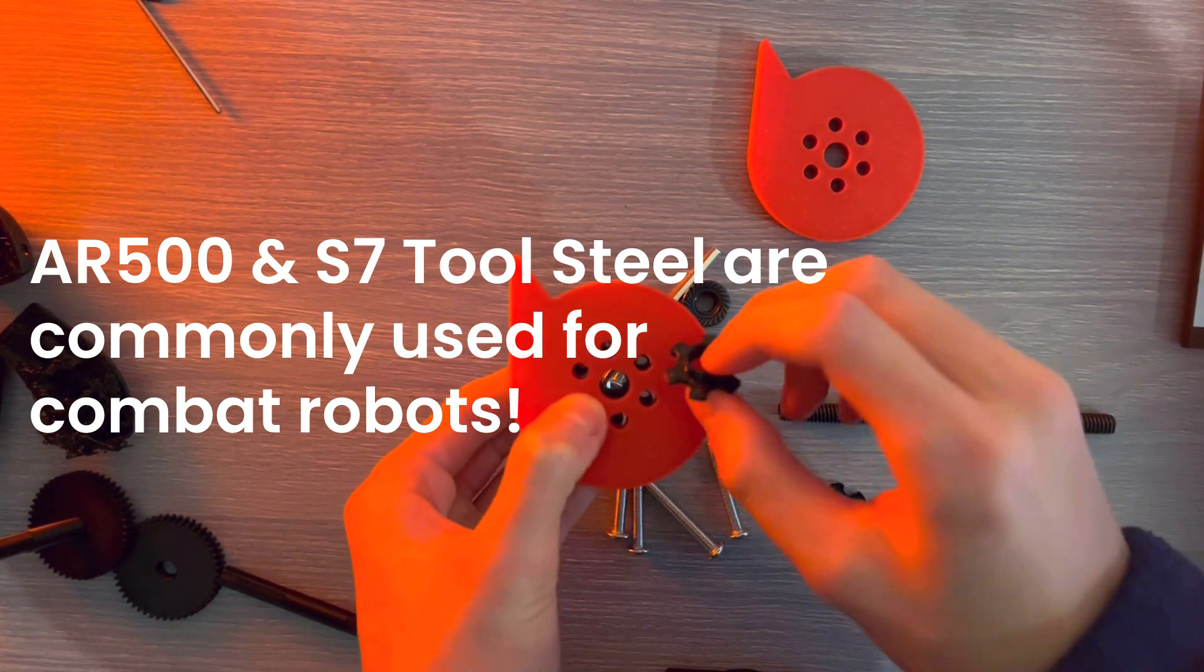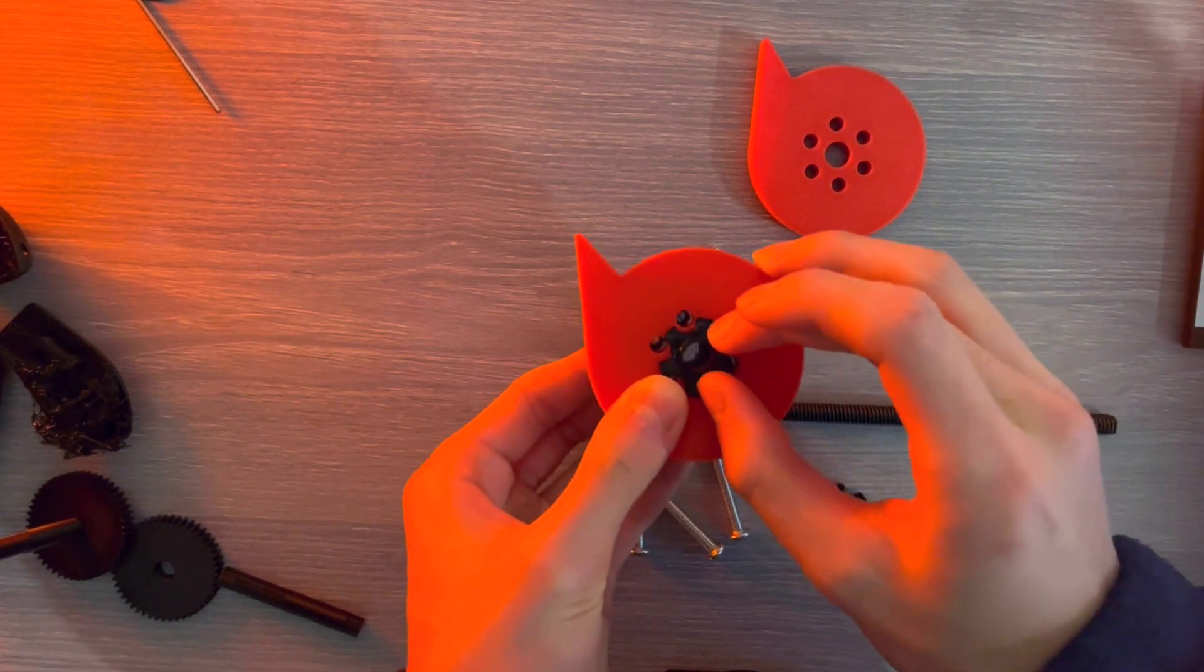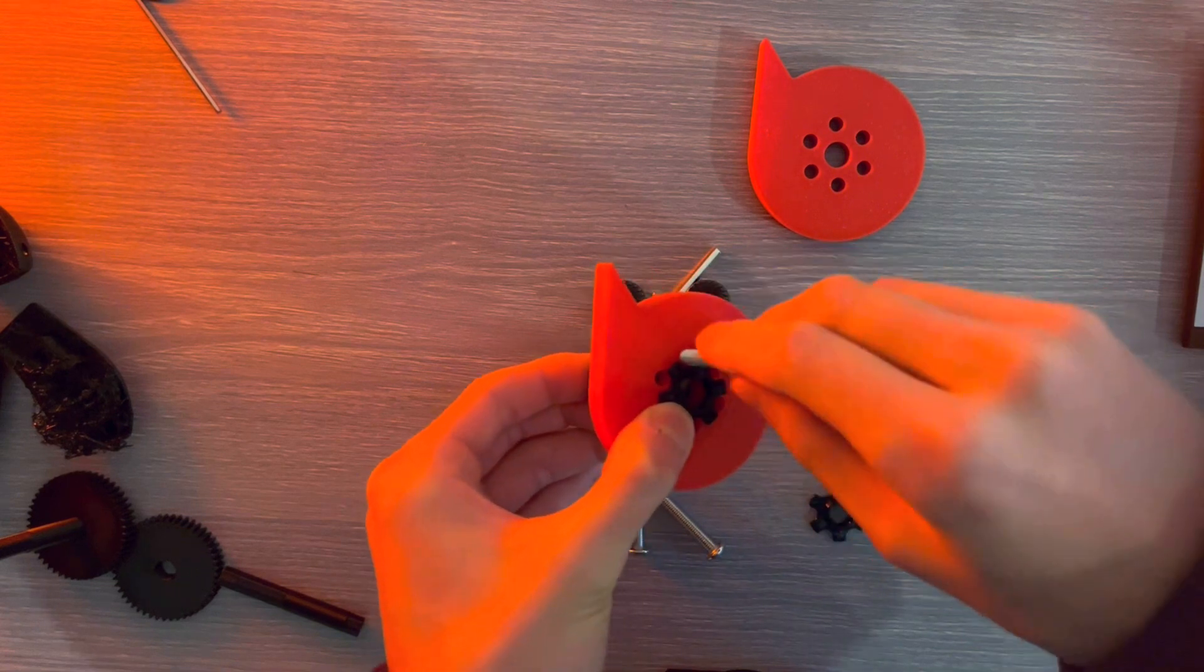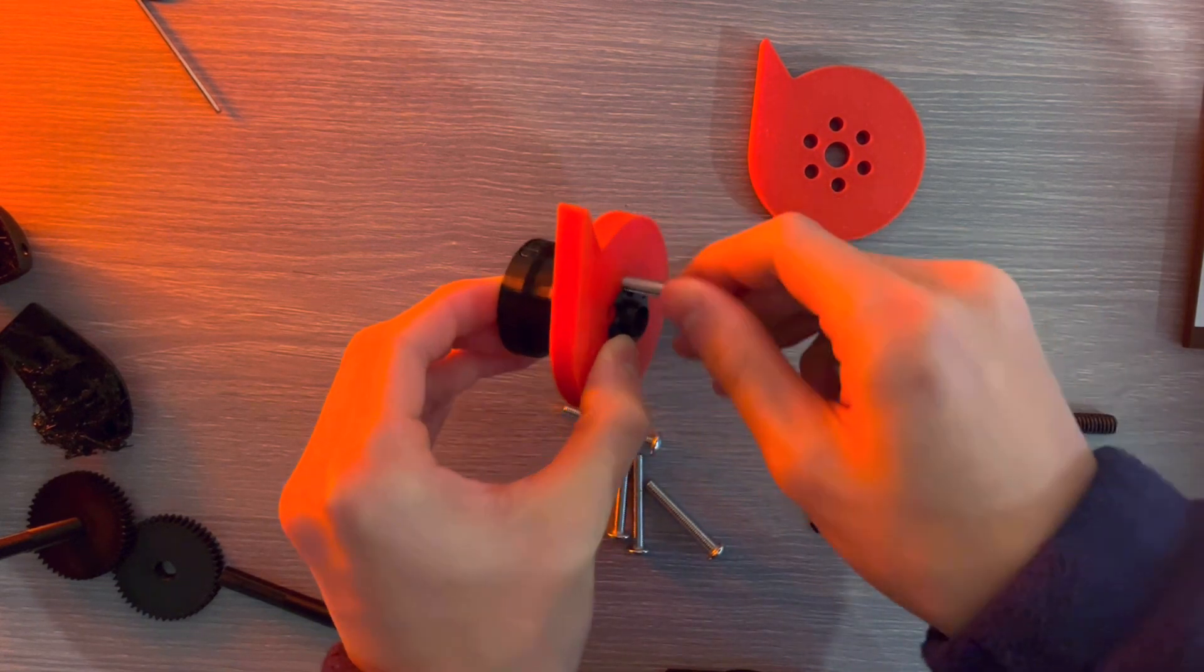So essentially, you want to take the spacer, put it right there, and start screwing in these M5 screws.